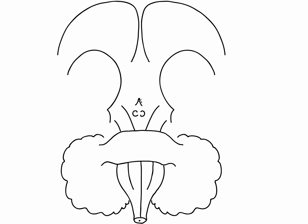Here we can see the pituitary stalk and the mammillary bodies of the diencephalon. Here we can see the two cerebral peduncles and the interpeduncular fossa in between. Here we've got the midbrain, the middle cerebellar peduncles and the cerebellum, and the two cerebellar hemispheres.